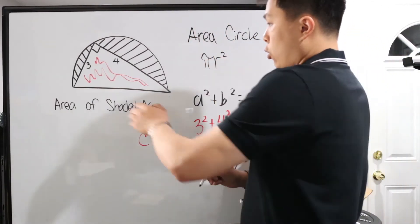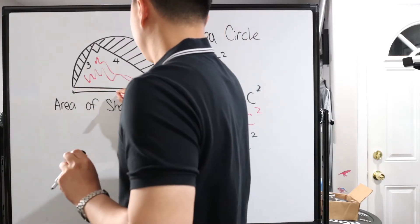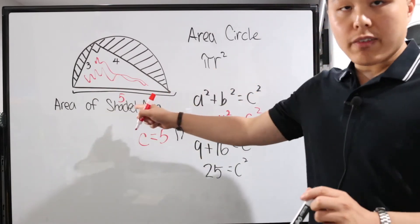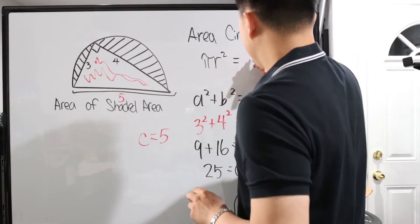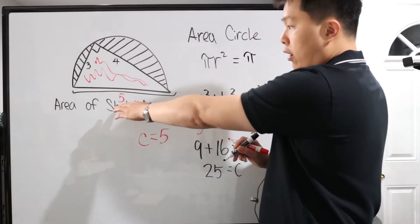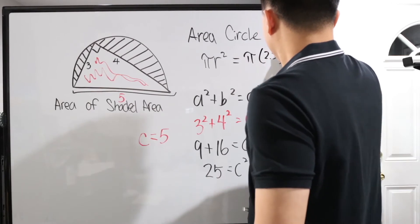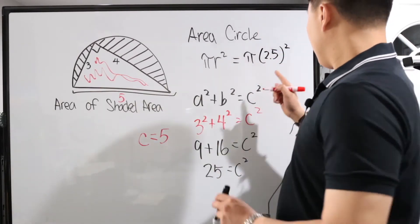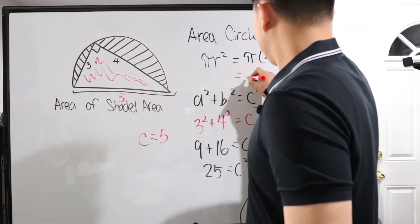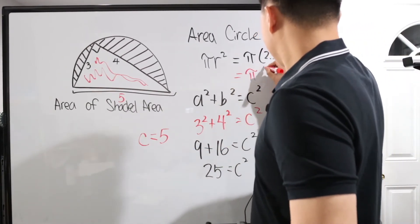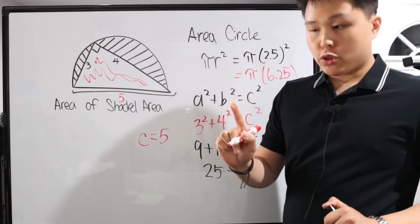This whole thing right here is five. So the radius is half of that. So what we're going to do is we're going to fill it in. That's pi and r is half of five. So that's going to be 2.5 squared. 2.5 times 2.5 is 6.25. So it's going to be pi times 6.25. That's the area of a circle.